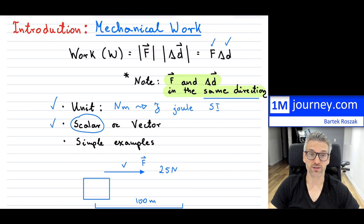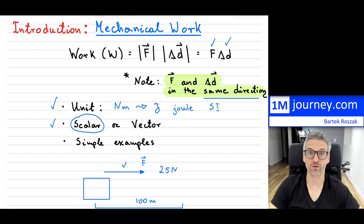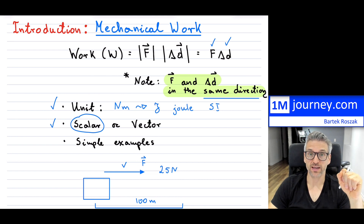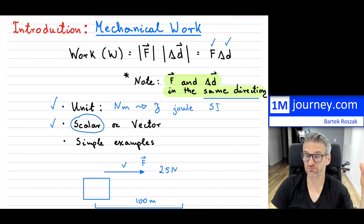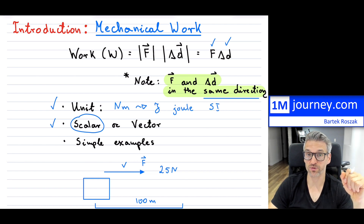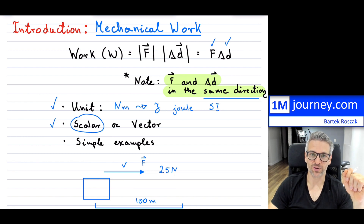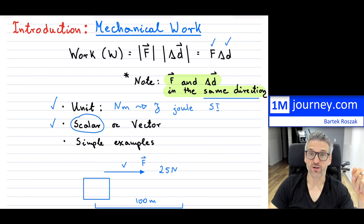If you're not going to displace the object at all — so if the displacement is zero and you're pushing on an object all you like — then by this definition of work, if displacement was zero, your work would have been zero. Mechanical work is dependent on the force being exerted over a certain amount of displacement. So if the displacement is zero, no work done. Similarly, if there's no force being applied — for example, something moving on a frictionless surface with no air resistance — the work done on that object would still be zero.